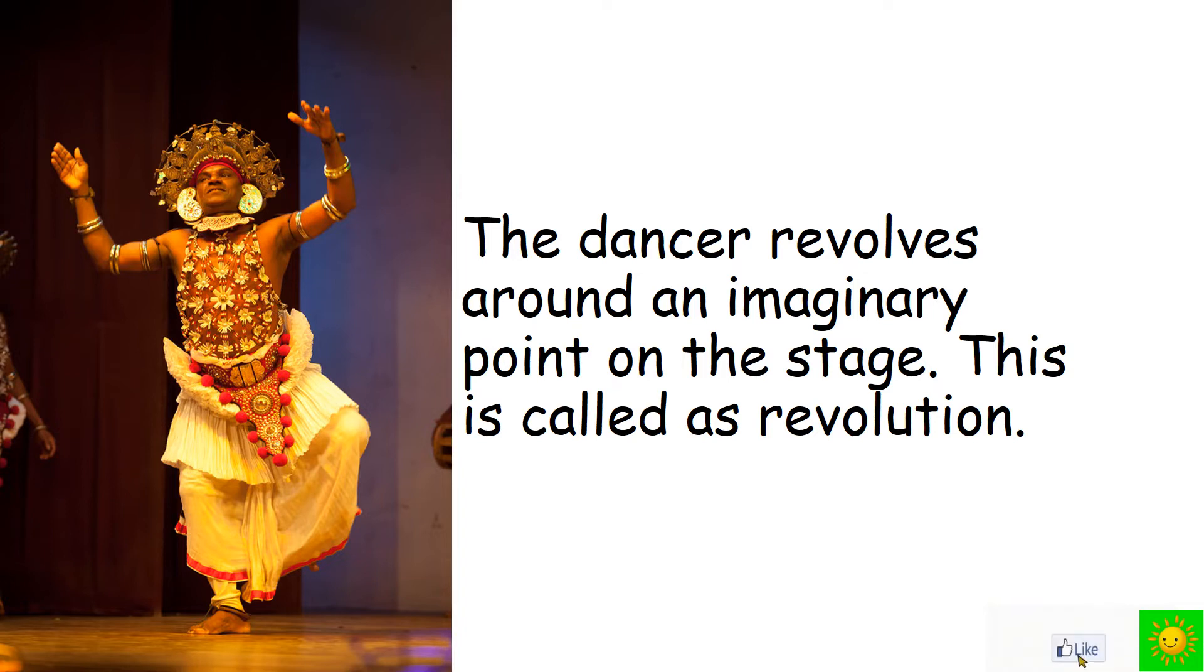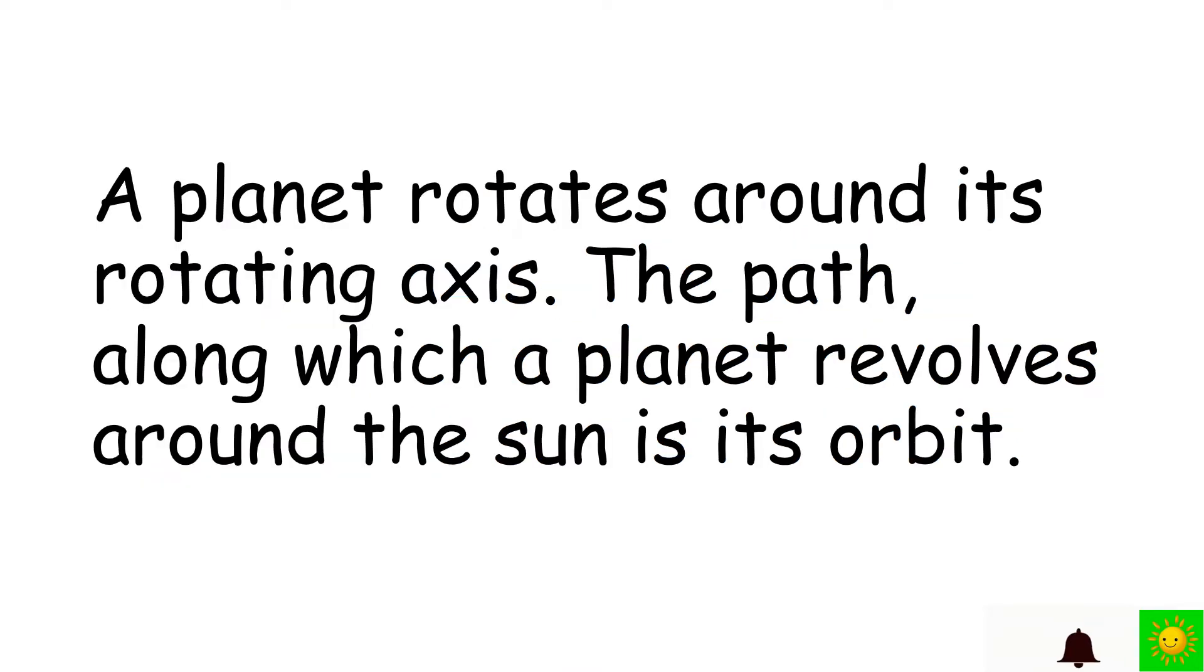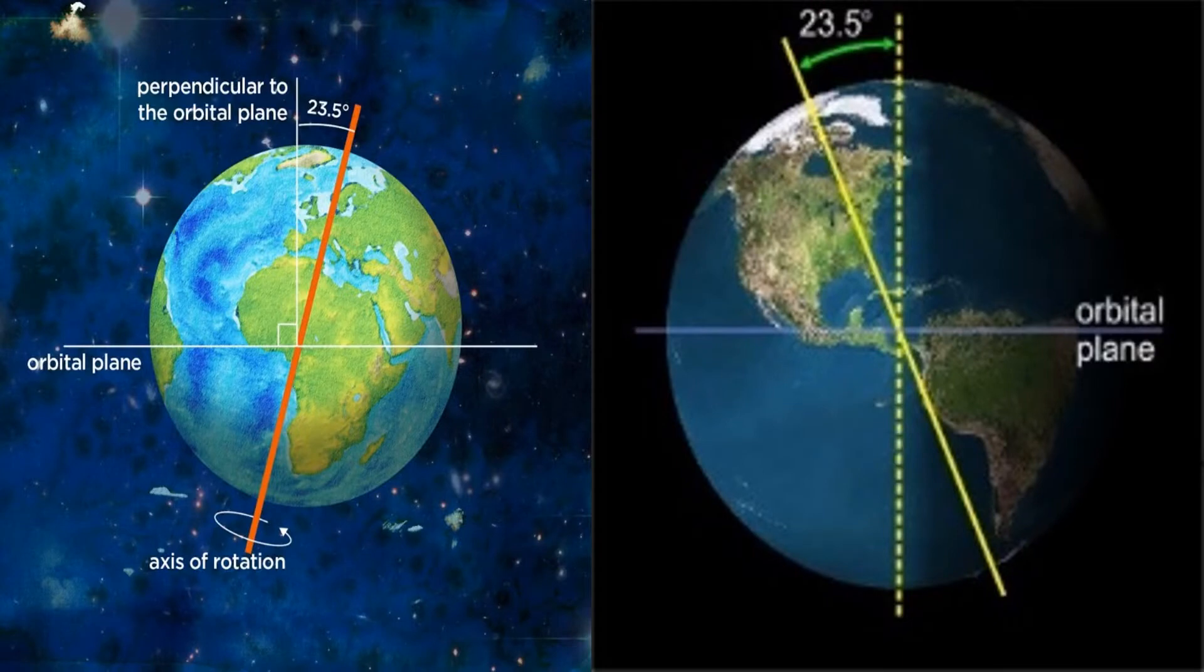A planet rotates around its rotating axis. The path along which a planet revolves around the Sun is its orbit. All planets have a tilt to its orbit plane when revolved. For example, the Earth has a tilt of 23.5 degrees to the perpendicular axis of its orbit plane.